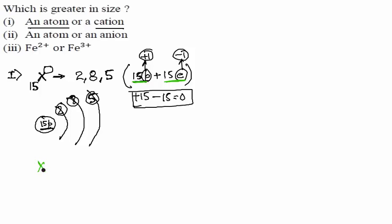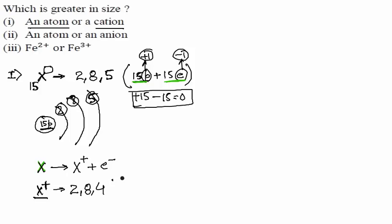Now suppose X loses one electron to form X⁺. The new electronic configuration becomes 2, 8, 4. The number of protons is still 15, but the number of electrons is now 14. So the charge is +15 − 14 = +1, which is why it carries a positive charge.